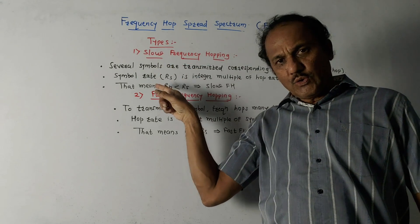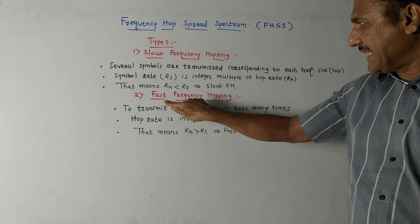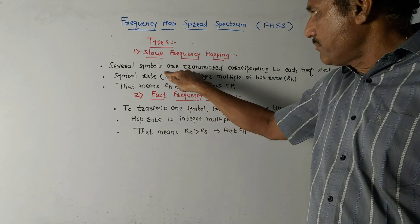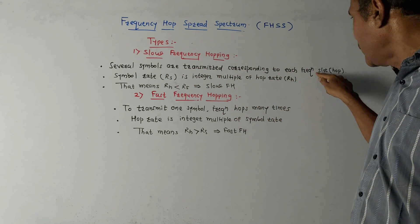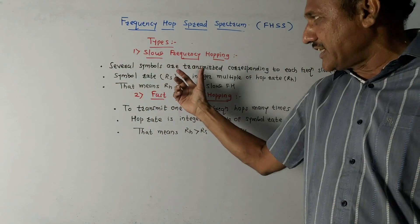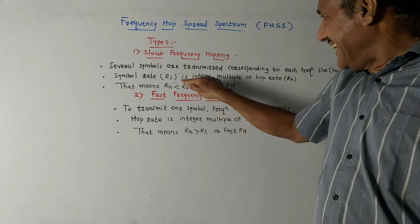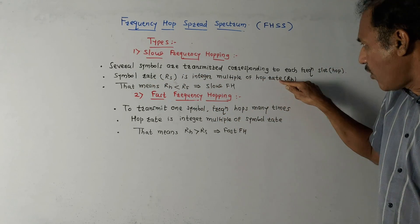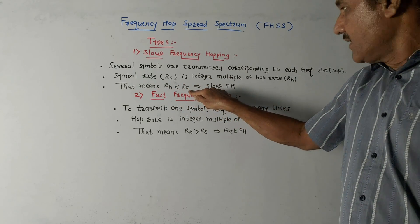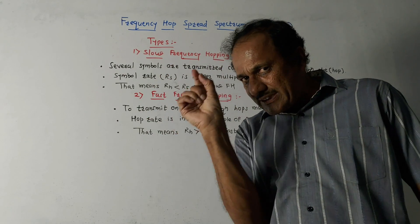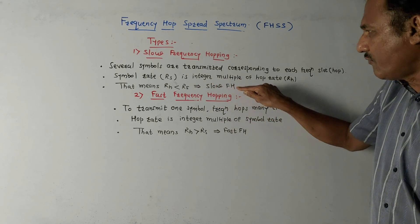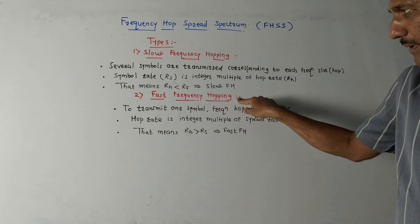The next part covers types of Frequency Hop Spread Spectrum. There are two types: first, slow frequency hopping, and second, fast frequency hopping. In slow frequency hopping, several symbols are transmitted corresponding to each frequency slot. This means the symbol rate is an integer multiple of the hop rate — that is, hop rate Rh is less than symbol rate Rs. Since several symbols are transmitted in a single hop, it is called slow frequency hopping.